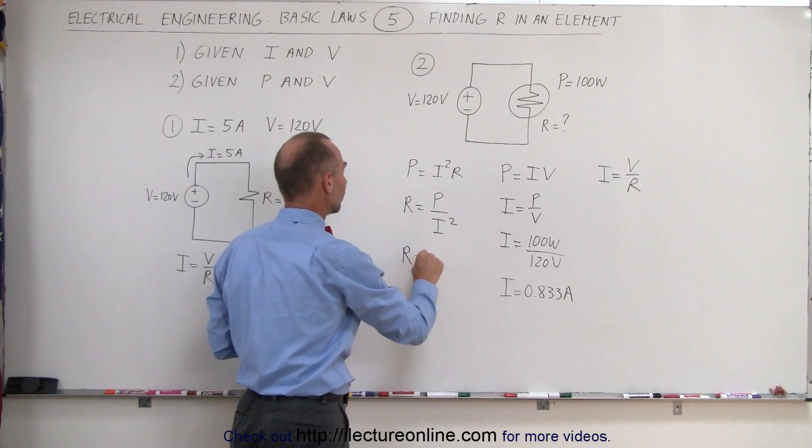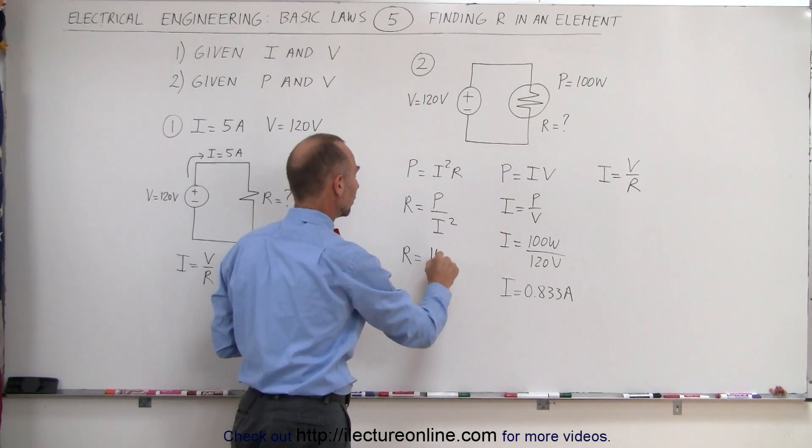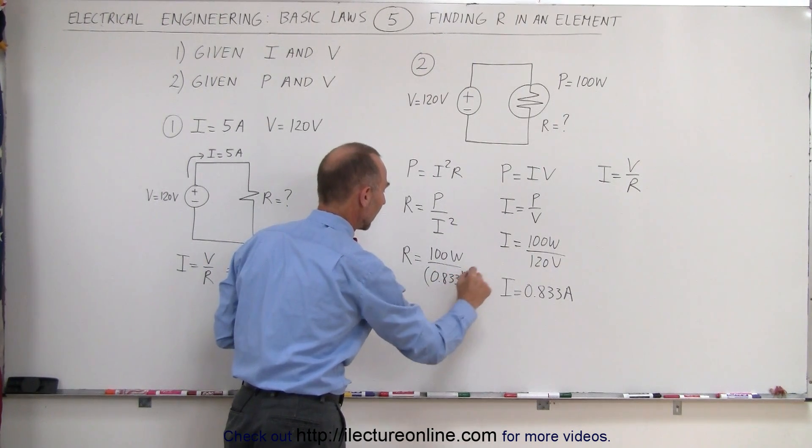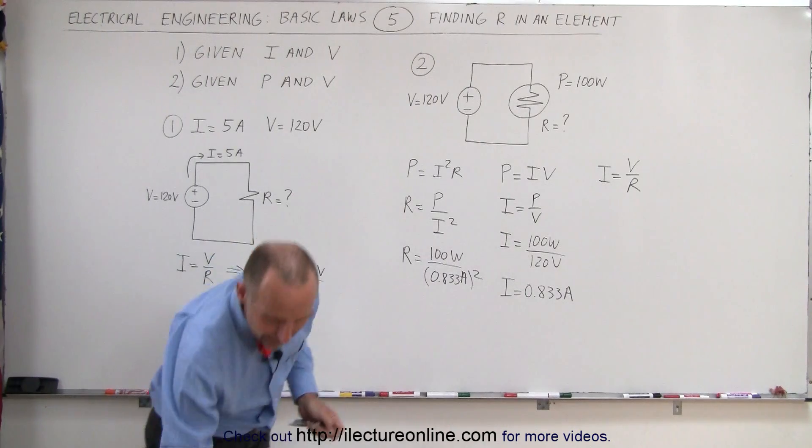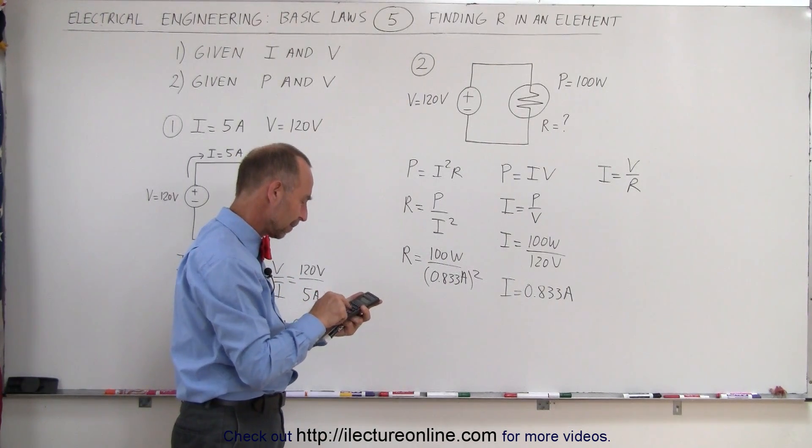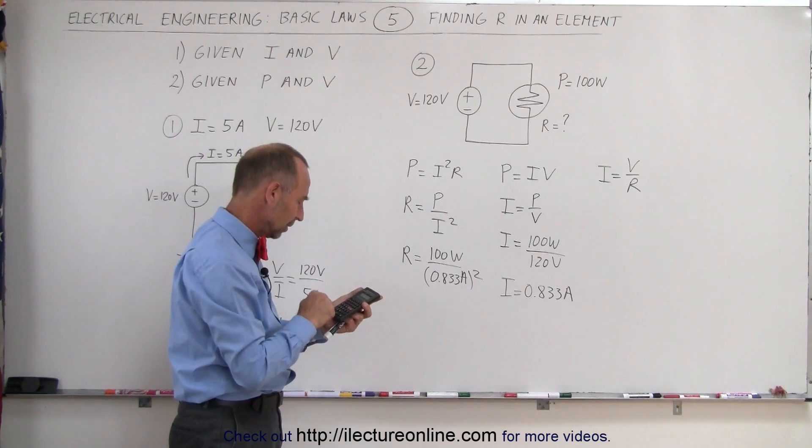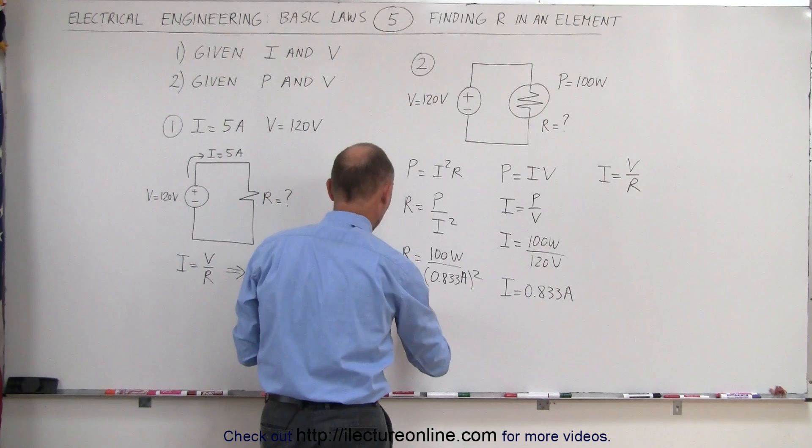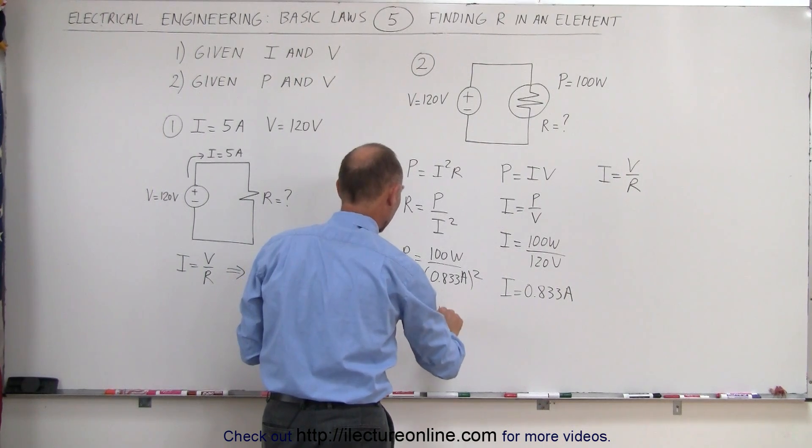The resistance equals 100 watts divided by 0.833 amps, and then we'll square that. So square that number, take the inverse of that and multiply it times 100, and that's 144 ohms. Resistance equals 144 ohms.